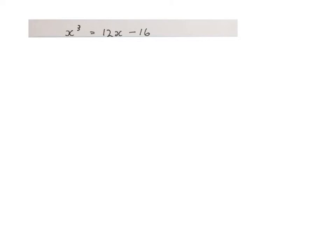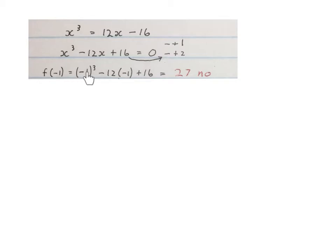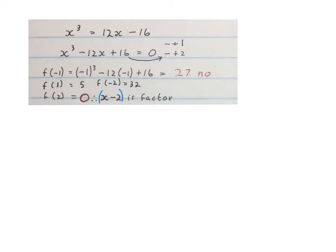I'm going to run through two more examples quickly. Here we have a cubic equation — we take everything to one side where x cubed is positive and equate to zero. Then I write down the factors of 16 — usually plus or minus 1, plus or minus 2, and by that time you have an answer. Plugging in minus 1 gives 27, so no. Plugging in plus 1 gives 5, no. Plugging in minus 2 gives 32, no. Plugging in plus 2 gives 0 — so x minus 2 is our first factor.